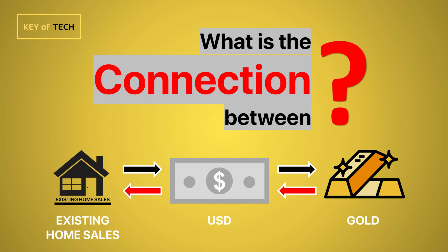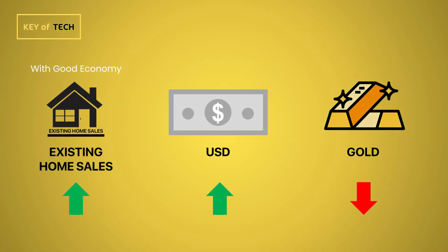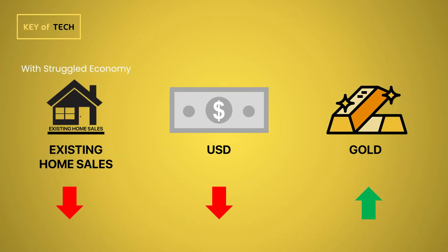When existing home sales are strong and the economy is doing well, the USD tends to strengthen as well. This can cause the price of gold to fall as it becomes more expensive for foreign buyers. Conversely, when existing home sales are weak and the economy is struggling, the USD tends to weaken and the price of gold may rise as investors seek a safe haven.